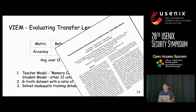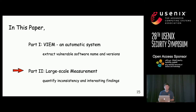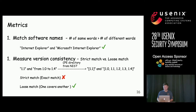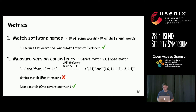After extracting vulnerable software names and versions using Veeam, we perform large-scale measurement. We first define our consistency metrics. If two software names share more common words, we consider them the same. For example, 'Internet Explorer' and 'Microsoft Internet Explorer' share two words, so we consider them referring to the same software. For versions, we distinguish strict match from loose match. We look up the CPE directory from NIST to convert version descriptions to version lists and compare them. If they are not exactly the same, strict match fails. However, if one range covers the other, they are considered a loose match.